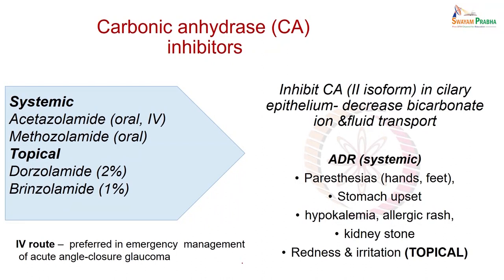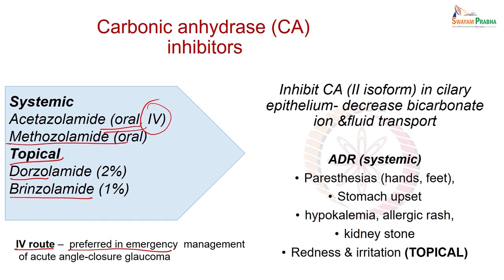Another agent is carbonic anhydrase inhibitors. They can be given by the intravenous route in emergency cases. In normal situations, topical carbonic anhydrase inhibitors are used — dorzolamide 2% or brinzolamide 1%. Acetazolamide, which is a conventional carbonic anhydrase inhibitor, has the advantage of being given by the oral route and can also be given in emergency situations by the intravenous route. Methazolamide is given by the oral route.